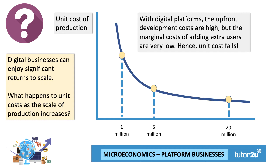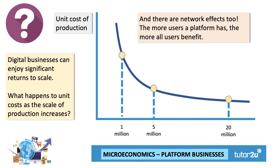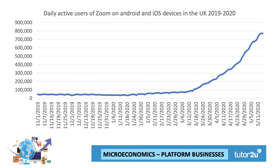The marginal cost of adding one extra user to the platform is very low — it could be close to zero. If the marginal cost is low, the unit cost falls as more people join the network. There's also something called network effects, where the addition of new users to platforms like TikTok or WhatsApp increases the value or benefit of the platform to existing users. This is the essential characteristic of a platform business.